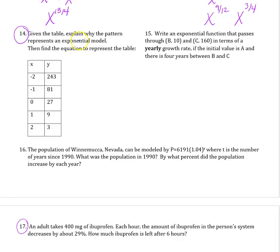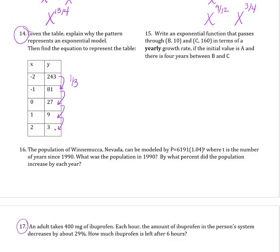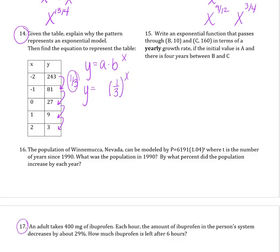Given a table, to explain why it represents an exponential model: look at the y-values and check that you're multiplying by a constant factor each time. Here, 27 divided by 3 is 9, 9 divided by 3 is 3 — we're multiplying by 1/3 each time, which is exponential. The function is a times b to the x, where b equals 1/3 (the decay factor) and a equals 27 (the y-intercept when x equals 0).